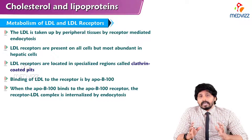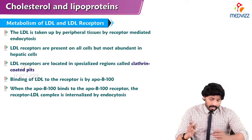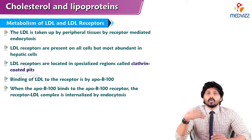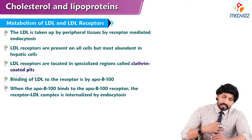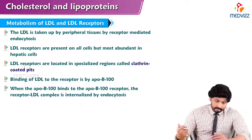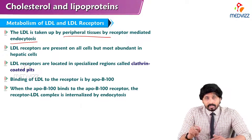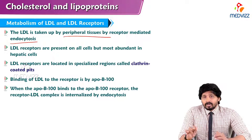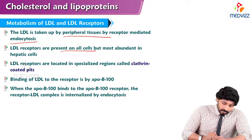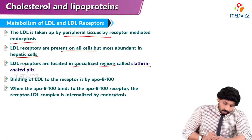This metabolism of LDL is complicated compared to other lipoproteins, because it needs special ligand binding sites over the target tissues. The LDL is taken up by peripheral tissues by receptor-mediated endocytosis. LDL receptors are present on all cells but most abundant in hepatic cells. LDL receptors are located in specialized regions called clathrin-coated pits.